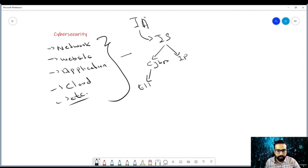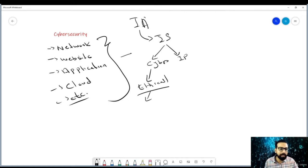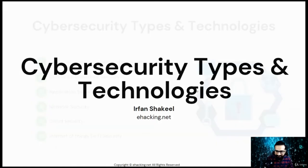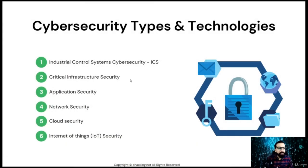Ethical hacking adopts the hacker's techniques to find loops and vulnerabilities. Cybersecurity is at the top of the hierarchy and can be divided into various types. Broadly speaking, cybersecurity can be further divided into six different domains. Each domain requires specialized skills and hence provides a unique career path.